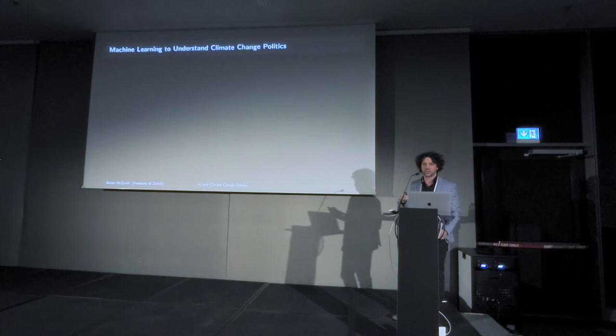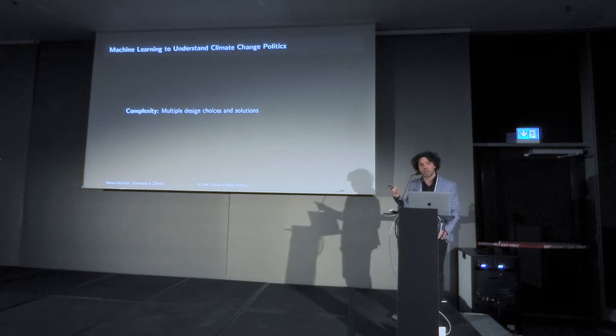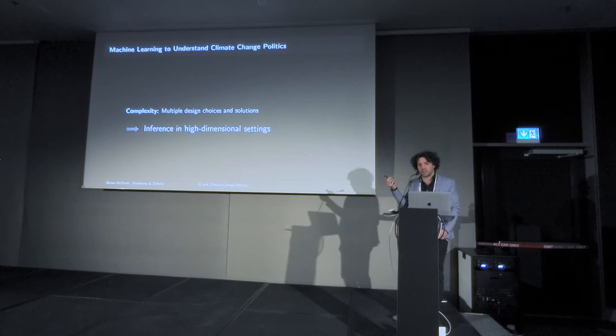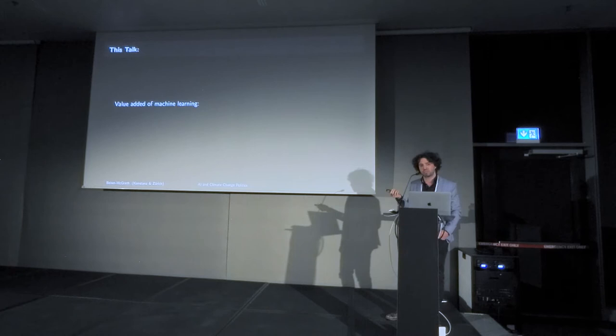How is machine learning going to fit in with this? The key way is by dealing with the complexity of policy design and seeing how this complexity feeds into political preferences. We have multiple design choices, multiple issues, multiple solutions, and there may be complex interactions between these when it comes to understanding political incentives and political feasibility. We need to make inference in high-dimensional settings, which machine learning is very good at. In this talk, I'll discuss the value added of machine learning in pushing our existing knowledge of the political and social science research on the feasibility of climate policy forward.